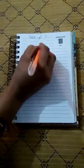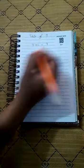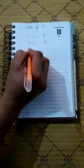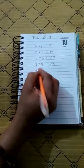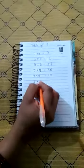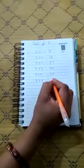9 1's are 9. 9 2's are 18. 9 3's are 27. 9 4's are 36. 9 5's are 45. 9 6's are 54.